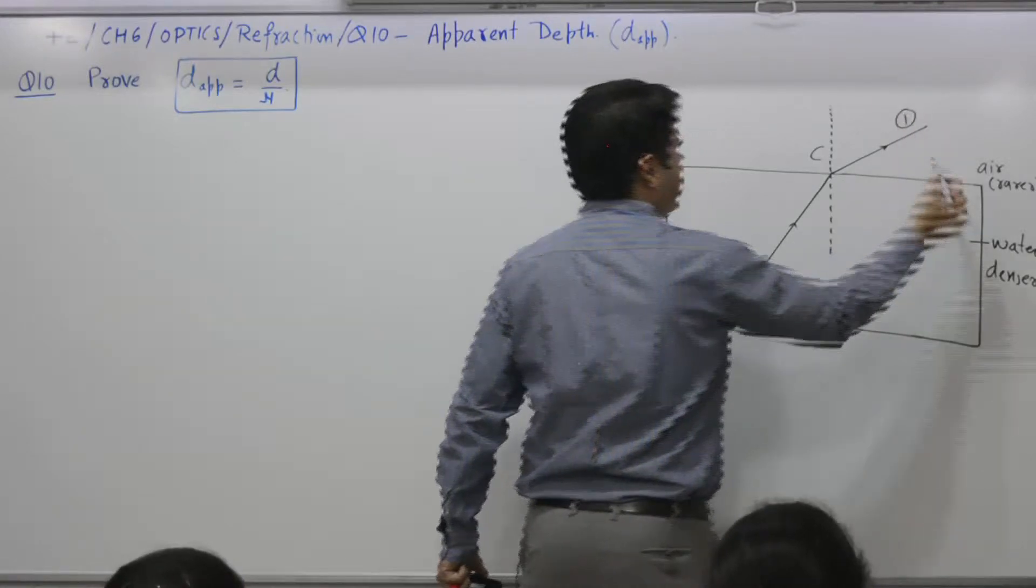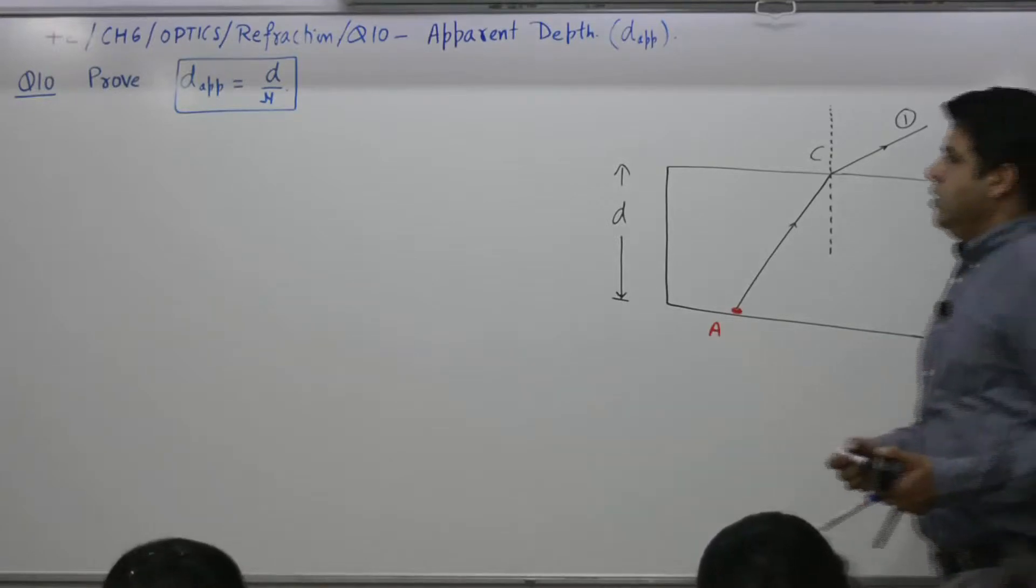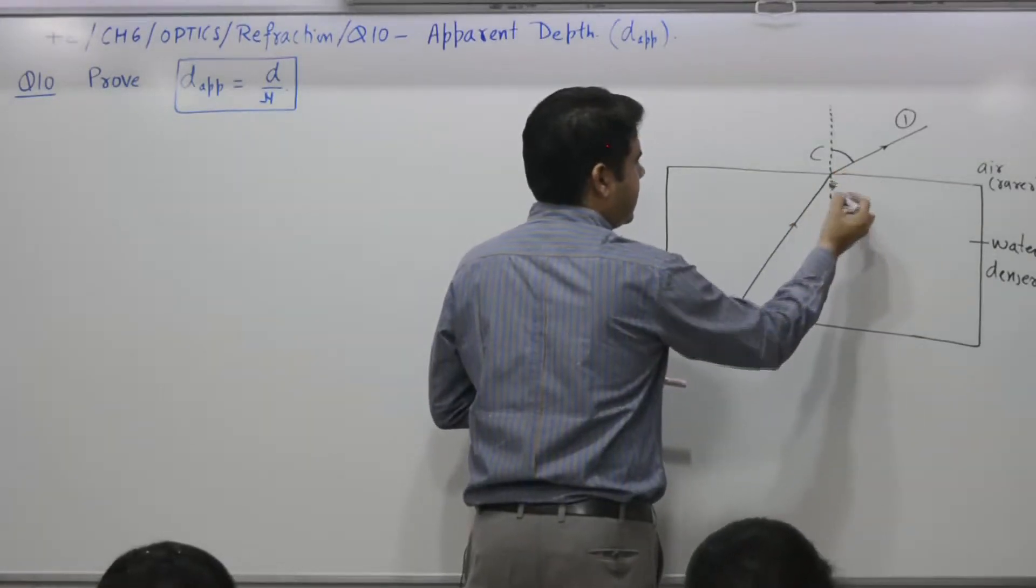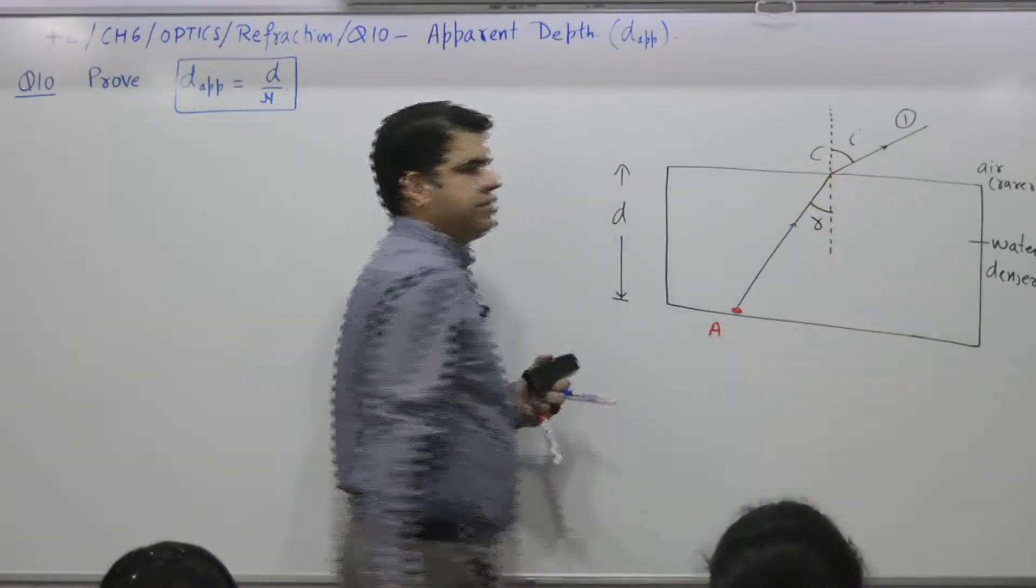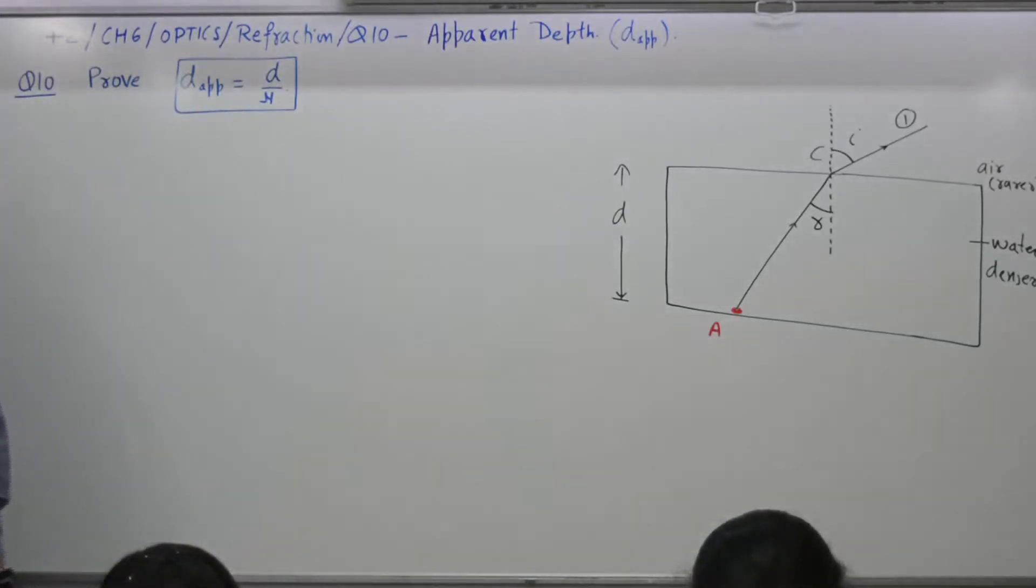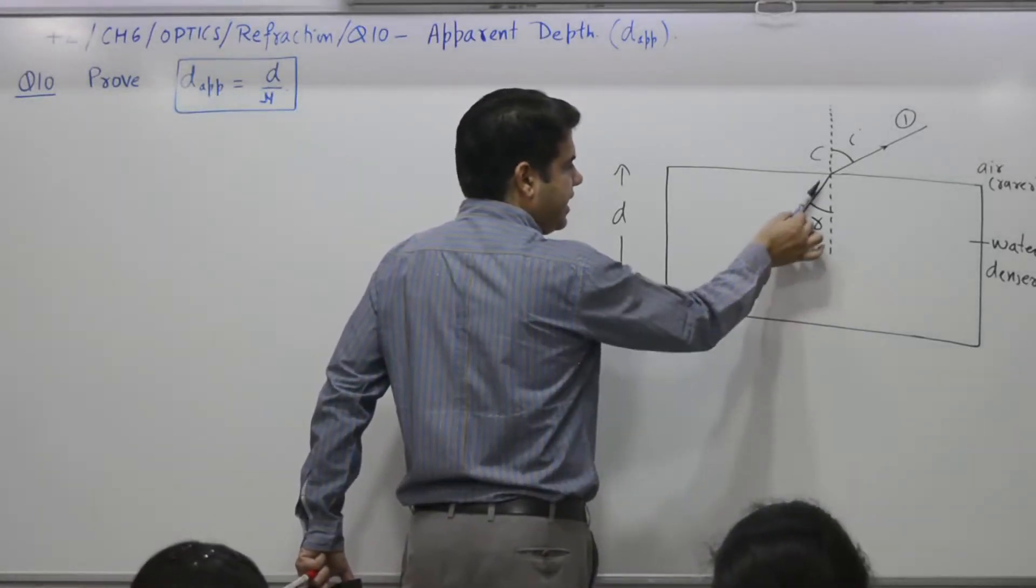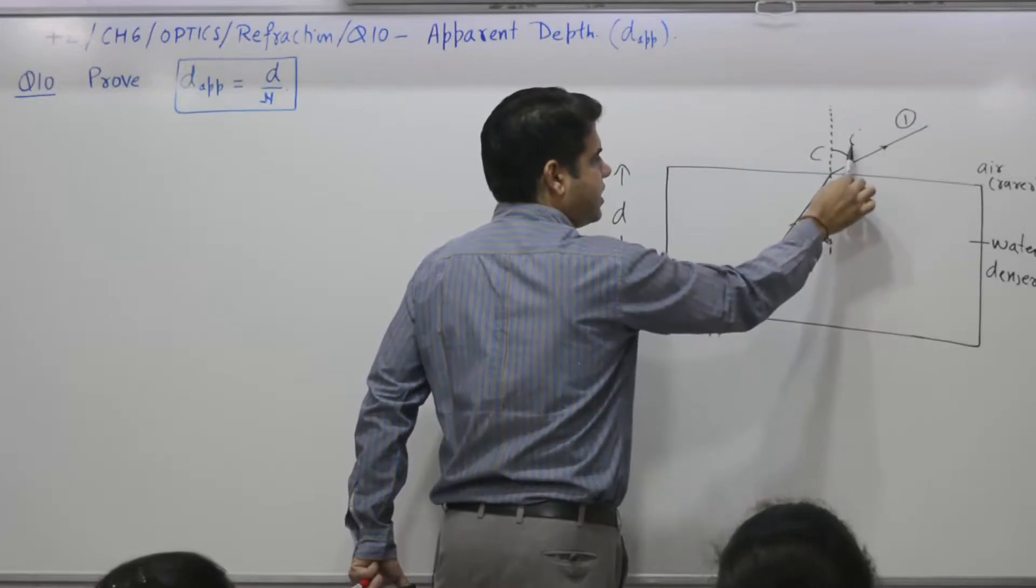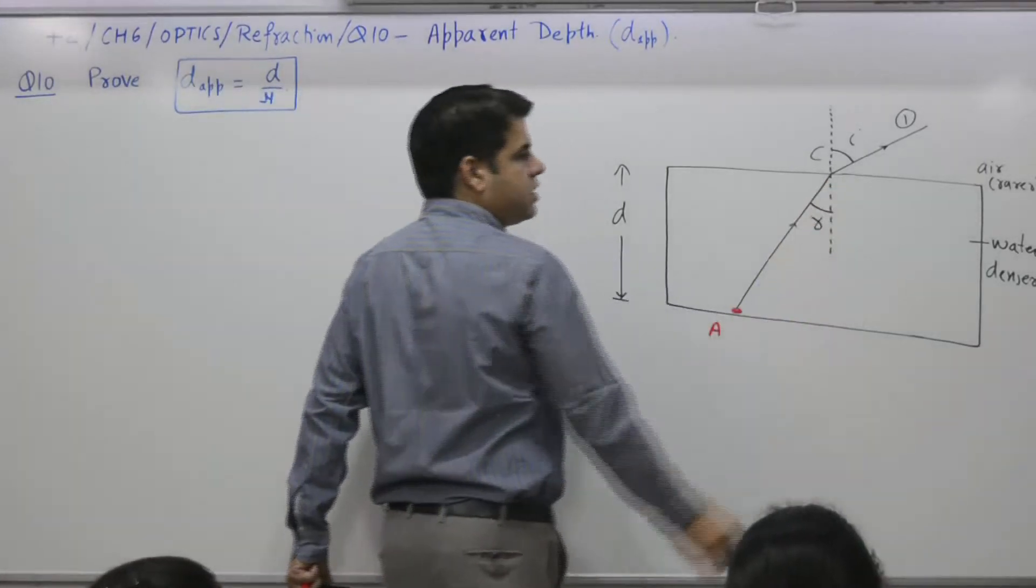This is ray number one, freehand drawing. You have to mark these two angles. This is angle of incidence, this is angle of refraction, but let me write this as i and r as it is. This is incident ray making some angle with the normal, this is refracted. So this is angle of incidence, this is angle of refraction.